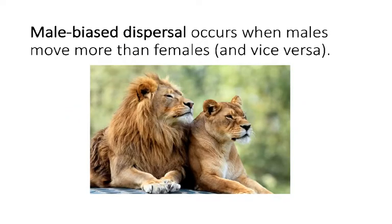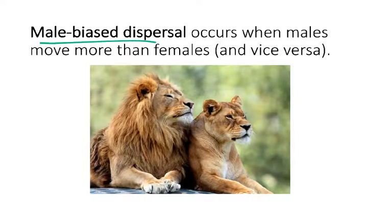In terms of the terminology, you'll see in the textbook and throughout this lecture, we'll use the terms male-biased dispersal or female-biased dispersal. Male-biased dispersal means males are the ones moving between populations more than females, and vice versa — female-biased dispersal means females are the ones moving between populations.